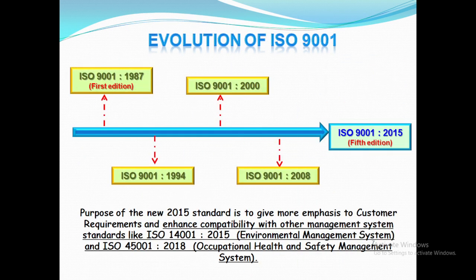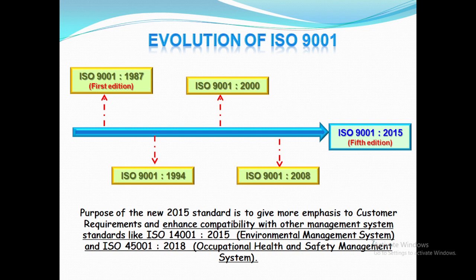Let's see the history and evolution of ISO 9001. The first edition was brought out in 1987, second in 1994, third in 2000, fourth in 2008, and the latest fifth edition in 2015. The purpose of the new 2015 standard is to give more emphasis to customer requirements and enhance compatibility with other management system standards like ISO 14001-2015, that is environment management system, and ISO 45001-2018 standard, that is occupational health and safety management system.